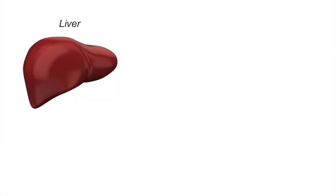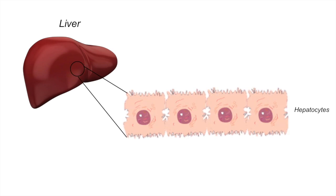Once fructose is in our bloodstream, it travels to the liver. The liver is actually the main site of fructose metabolism. If we look at a microscopic level of the liver, we see the hepatocytes, which absorb and transport fructose into the hepatocyte through GLUT2 as well.